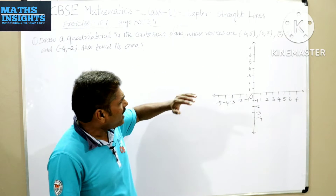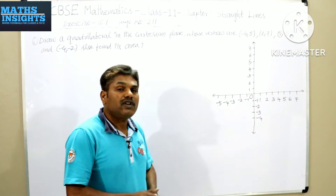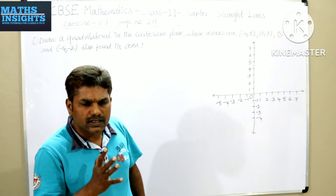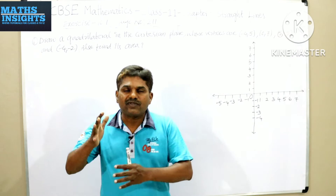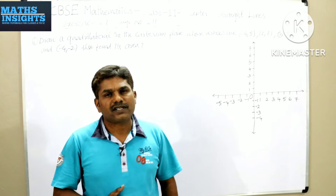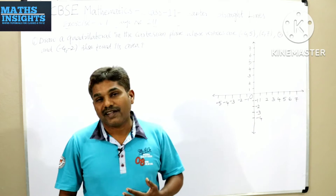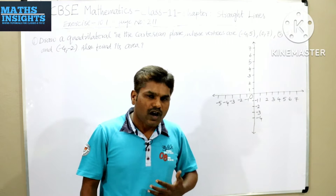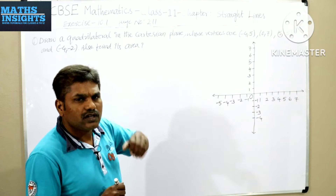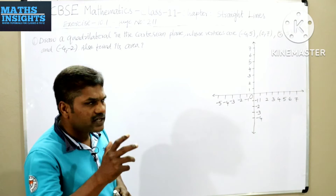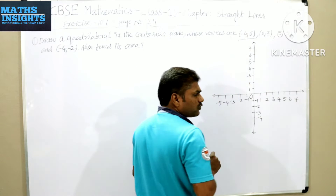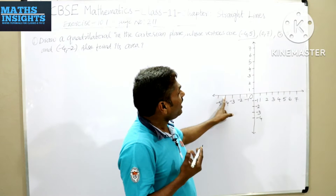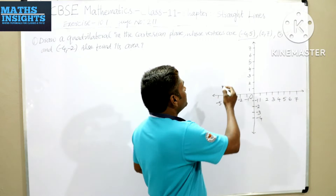In this case, I have to plot all these points and then join them to get a quadrilateral. The first vertex is minus 4 comma 5 — on the x-axis take minus 4, and on the y-axis positive 5 means go up. You will get that point here, so the coordinates of this point are minus 4 comma 5. For 0 comma 7, the x-coordinate is 0, so this point lies on the y-axis.